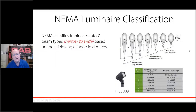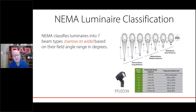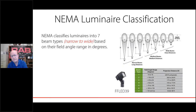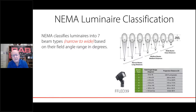The first topic is NEMA beam configurations, or NEMA luminaire classifications. There are seven different classifications ranging from wide to narrow, based on the field angle range in degrees. Looking at the chart, you'll see one through seven from left to right. The narrow beams — the lower numbers — send the light further, more like a spotlight. Then you'll see the medium and wide angle beams, which cover closer distances but with a wider angle.